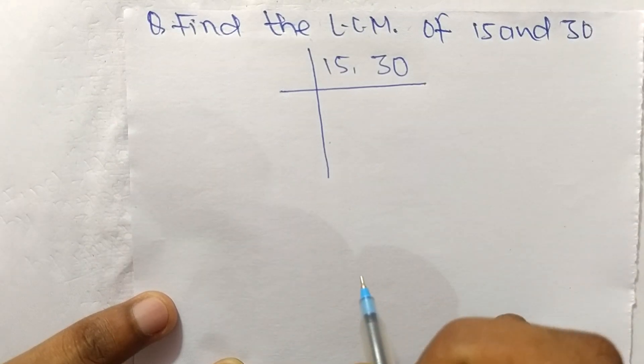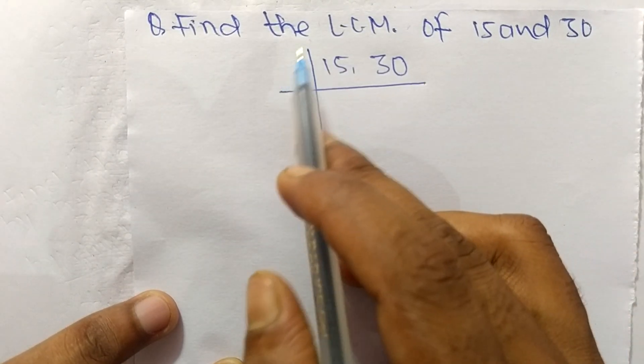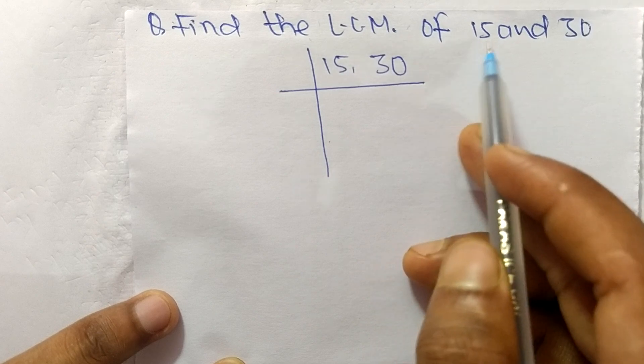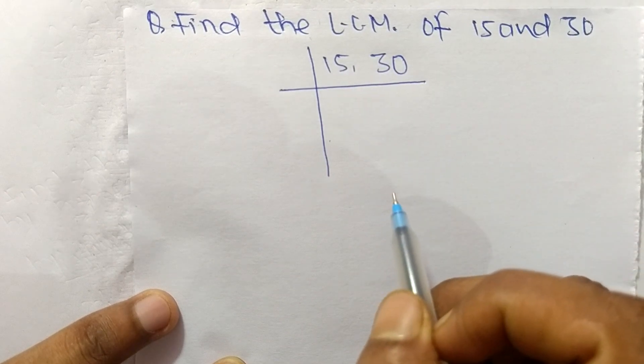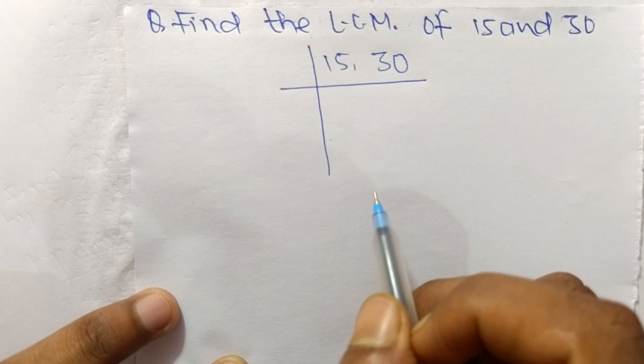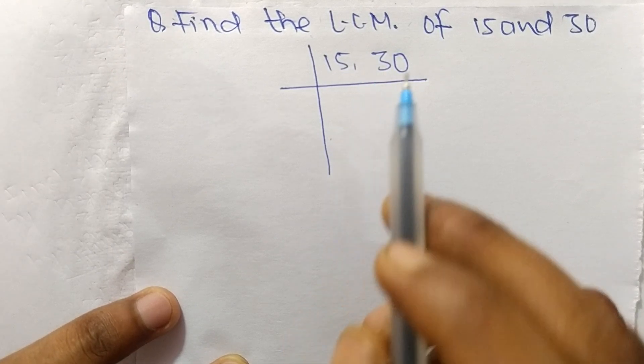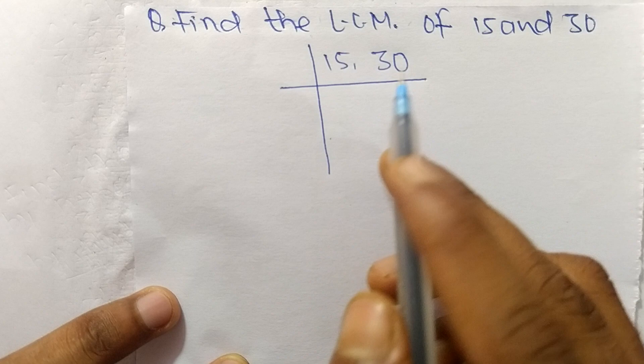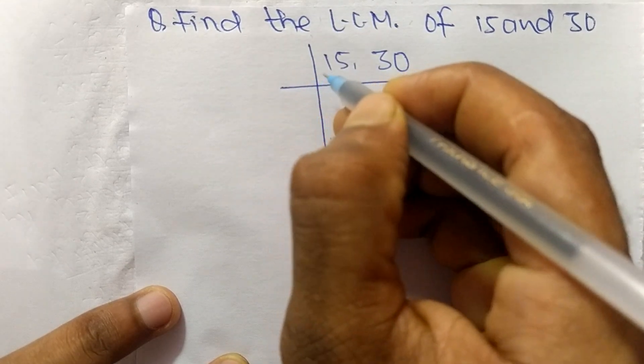Today in this video we shall learn to find the LCM of 15 and 30. To find the LCM, first we have to choose the lowest number that can exactly divide 15 and 30.